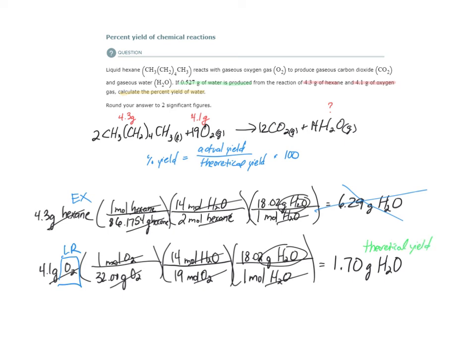So, 1.7 grams of water is our theoretical yield. So, let's find the percent yield. It's equal to the actual yield, 0.527 grams, divided by the theoretical yield, 1.70 grams, times 100. So, 0.527 divided by 1.7, times 100, is 31%.